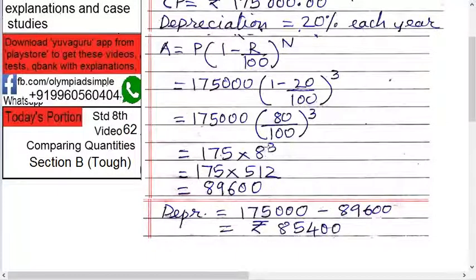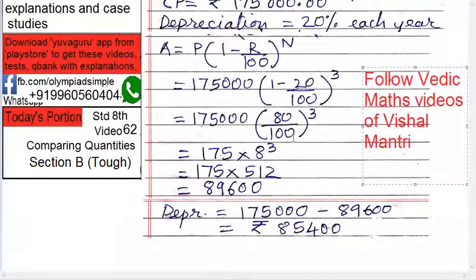Now multiply this. It becomes 89,600. Now this multiplication is again very easy. Follow the Vedic Maths videos of mine. In Vedic Maths, you can solve all these big numbers within minutes, only on fingers also. So that's easier it is.